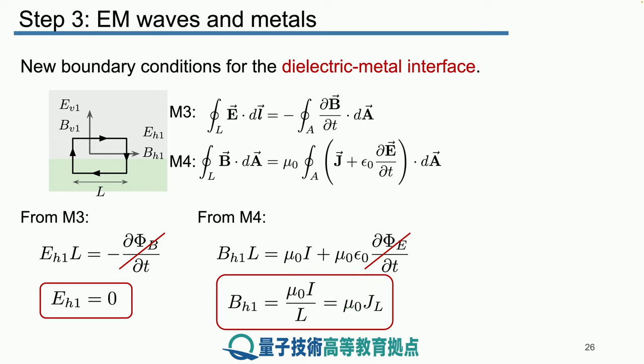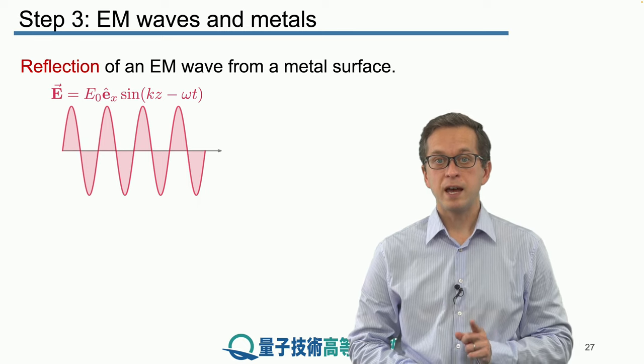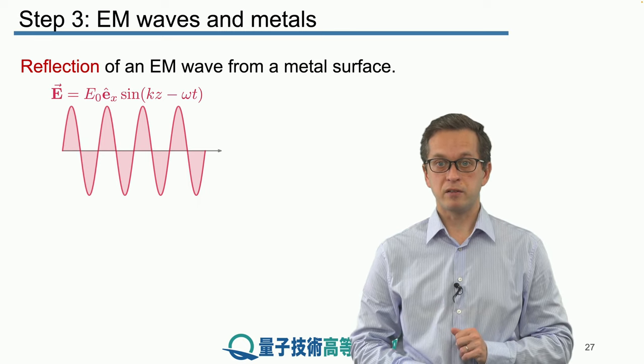So we see that these four boundary conditions are very different in the case of metals, when we compare them to the case of the dielectrics. In the next step, we will also consider what are the consequences. But in order to do that, let's consider what happens to an electric field, to an electromagnetic wave, as it is incident on a metal surface.